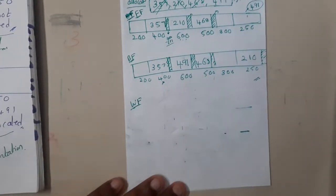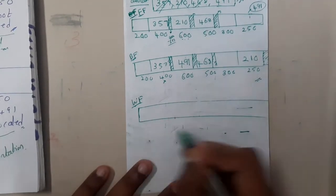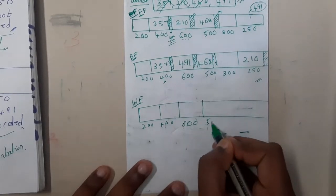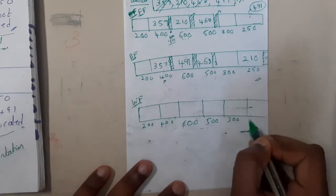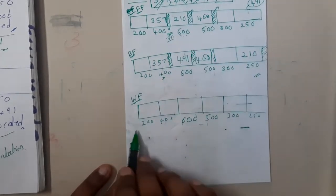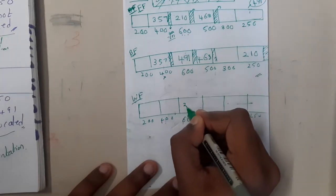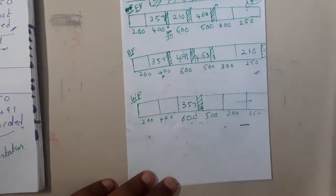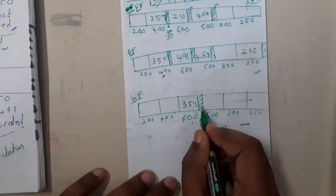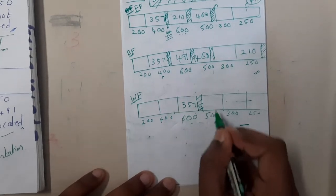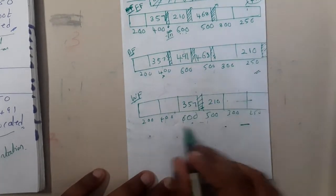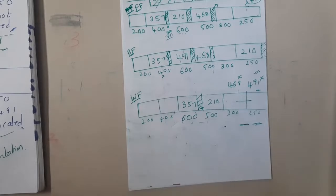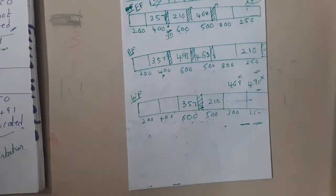Now for worst fit: instead of fitting in the best possible slot, we fit in the worst possible slot. For 357, the worst slot is 600, so we place it there — wasting about 243 units. For 210, we place in 500. Now for 468 and 491, there are no suitable remaining slots, so neither can be allocated. That is the worst fit approach.